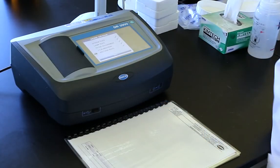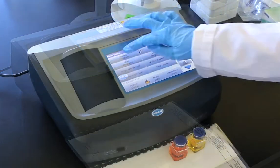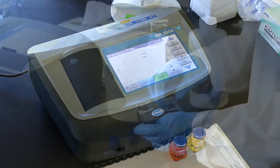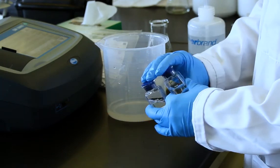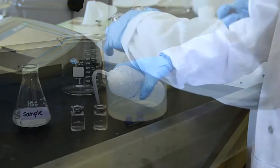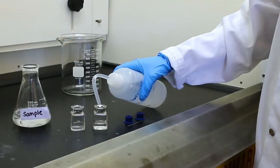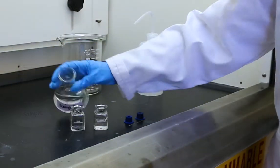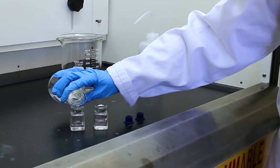Power on the instrument and select the appropriate program. Rinse the set of sample cells with deionized water. Fill the blank cell with deionized water to the line. Condition the sample cell with the sample water and then fill it to the line.